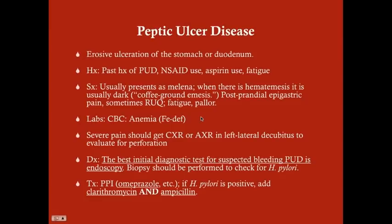Peptic ulcer disease is erosive ulceration of the stomach or duodenum, with many causes: idiopathic, due to NSAIDs or aspirin, or due to Helicobacter pylori. When looking at the history, the patient may have a past diagnosed history of PUD, may be on chronic NSAIDs for pain, on a daily aspirin, or may just have a history of chronic fatigue — indicating slow, chronic blood loss.